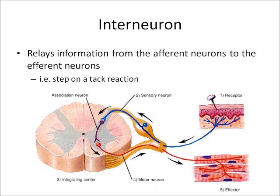The interneuron relays information from the afferent neurons to the efferent neurons. For example, in a step-on-a-tack reaction: you step on a tack, your sensory neuron brings information to the spinal cord, the interneuron understands what's going on, sends information back out through the motor neuron, and movement is caused. There is a picture there showing what's going on.